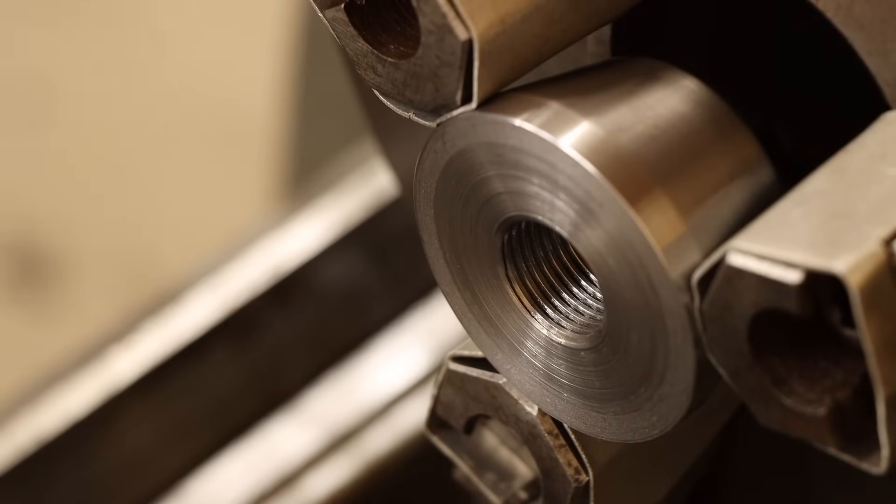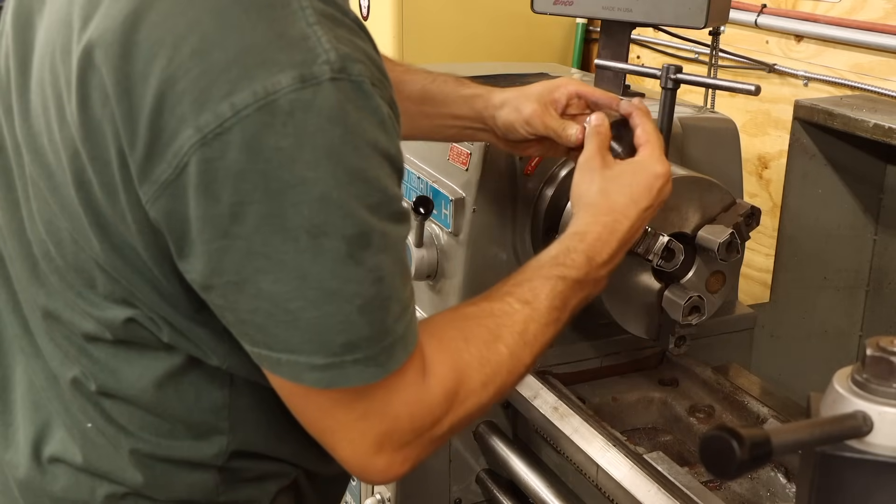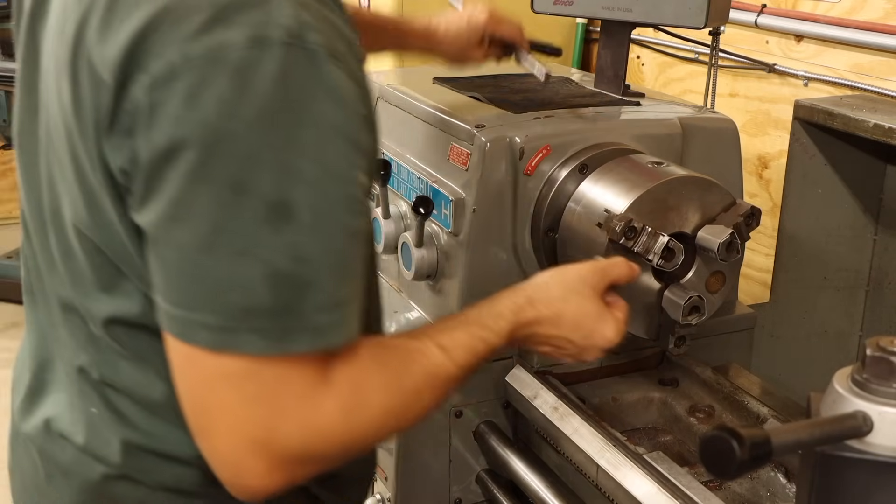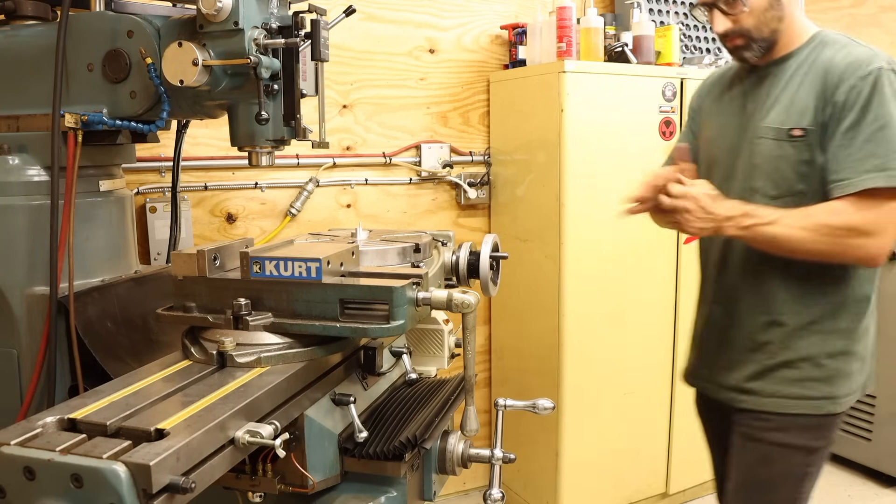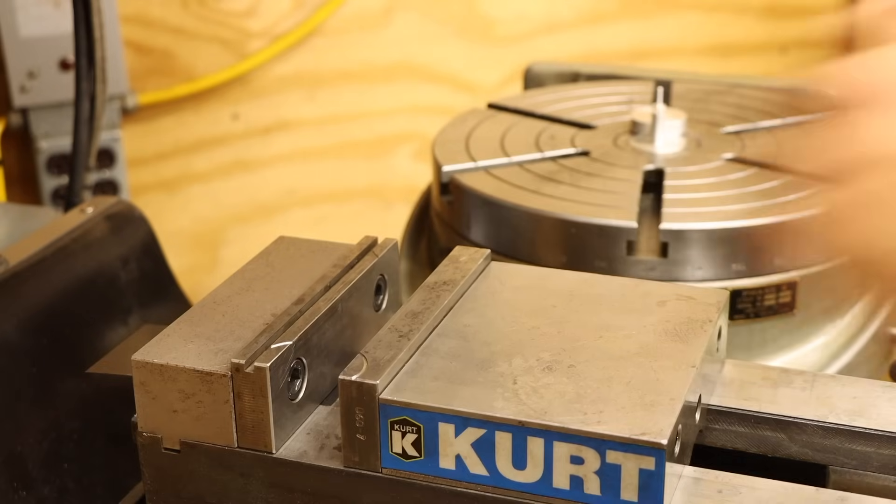Let's move over to the mill and cut the wrench flats. As I said before, the wrench flats aren't strictly necessary for this part, but they are my backup, just in case I'm not able to adequately tighten the nut with the lever. The first flat can go anywhere around the perimeter, so I'll just pick a spot to clamp.